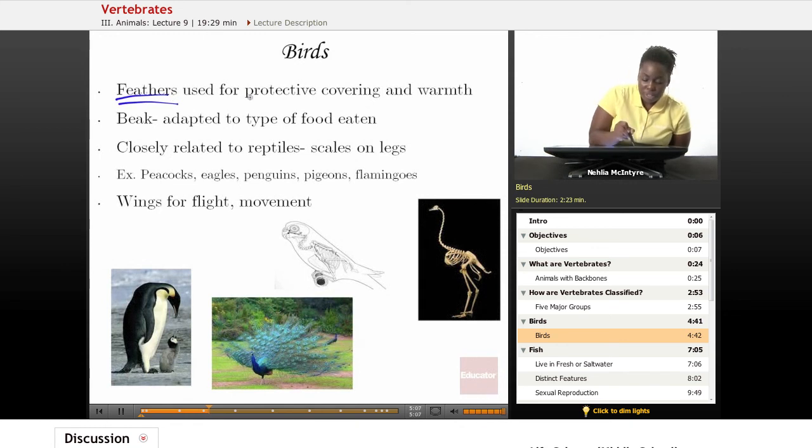So these feathers are used for protection, for a protective covering of their body, and they're also used for insulation and warmth. As you know, most birds actually cannot survive very long in extreme cold temperatures. Some can, but most can't. And so those feathers help them to moderate their body temperature.